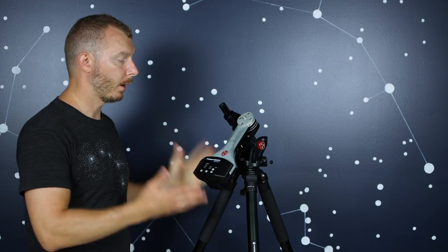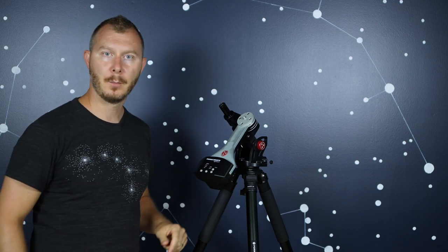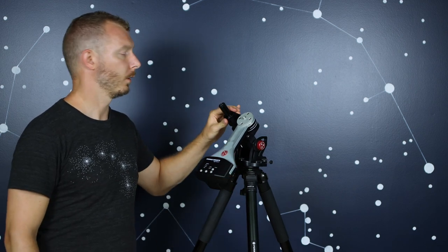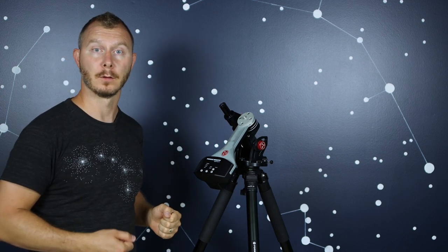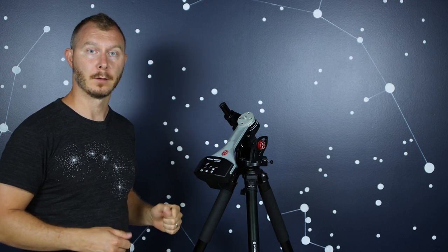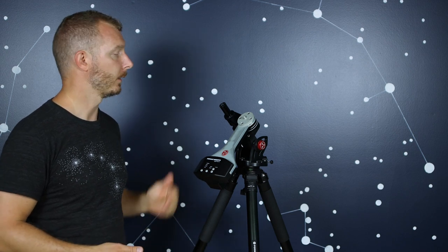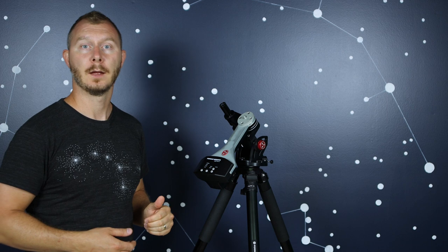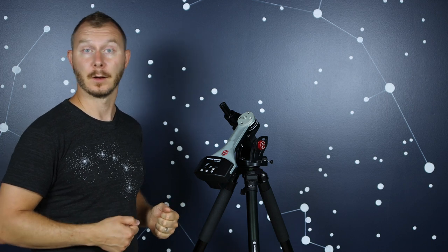All right, well we've got our mount on the tripod, we've got our wedge, our polar scope's put together, night's falling and we're now ready to do our polar alignment. So we're going to take a look at a virtual polar alignment here and give you a look through the polar scope and show you exactly what it is that you're trying to accomplish.